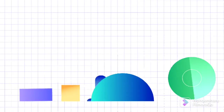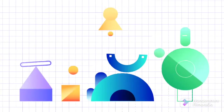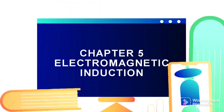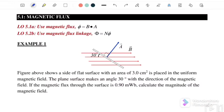Welcome to my channel. Today we are going to discuss Chapter 5: Electromagnetic Induction. In this video, we are going to discuss Example 1 on magnetic flux. We have two equations — the first one is: magnetic flux equals B dot A, or we can write it as BAcosθ.